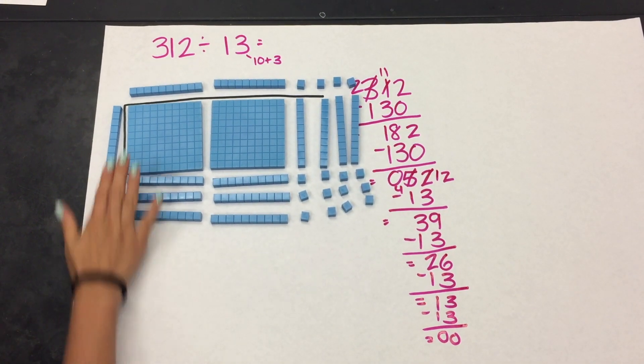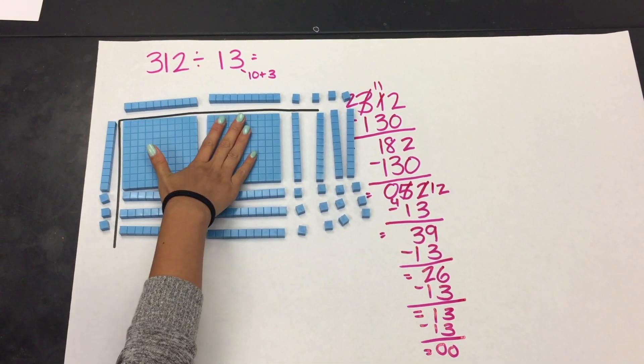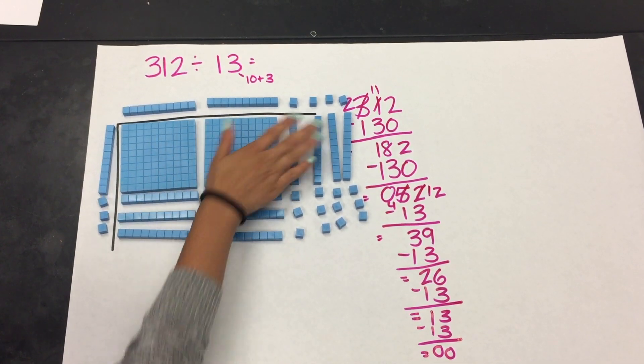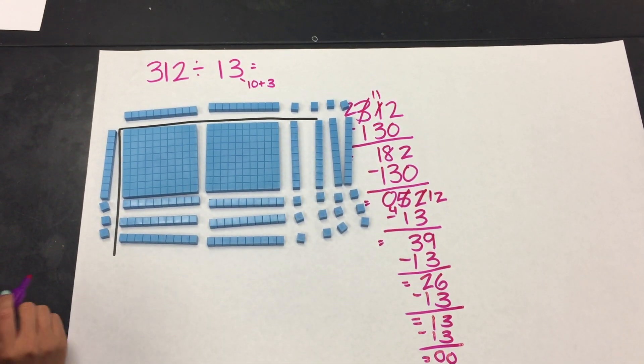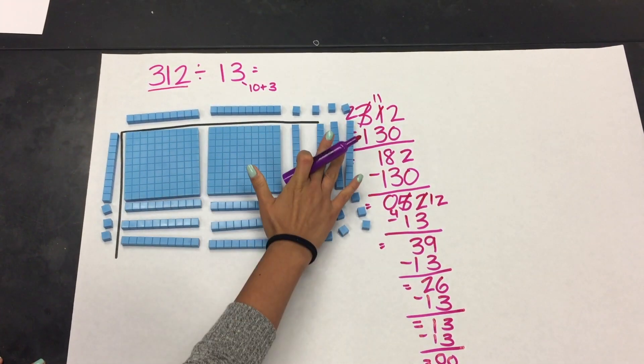So I can double check to make sure that I have my total or my dividend of 312. So I have 100, 200. I know that 10 tens gives me another 100, so there's 300 and 312. You may want to have students check that they have their total dividend on the inside.